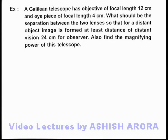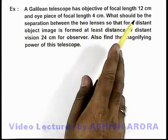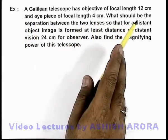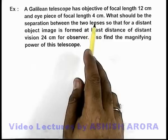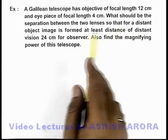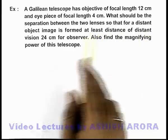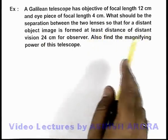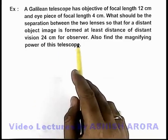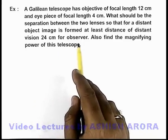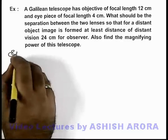In this example, we are given that a Galilean telescope has an objective of focal length 12 centimeter and an eyepiece of focal length 4 centimeter. It is asking what should be the separation between the 2 lenses so that for a distant object the image is formed at the least distance of distinct vision, 24 centimeter, for an observer. We are also required to find the magnifying power of this telescope.